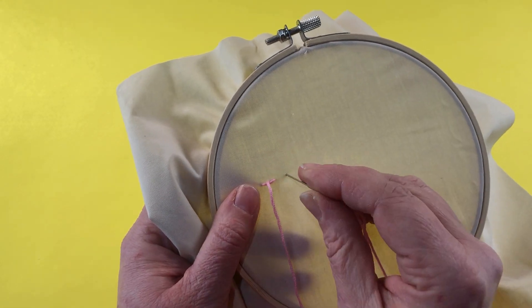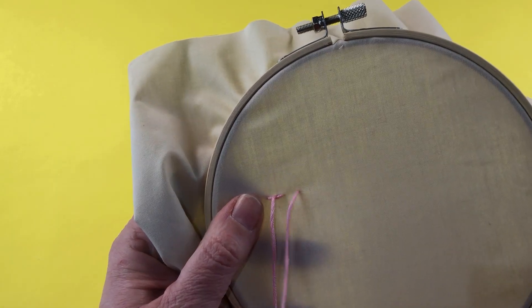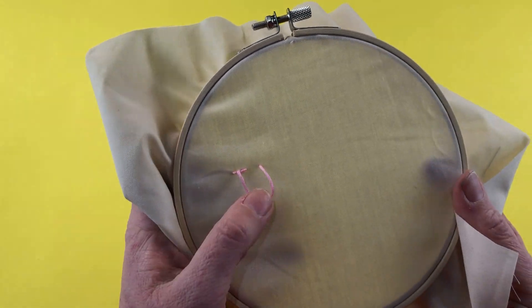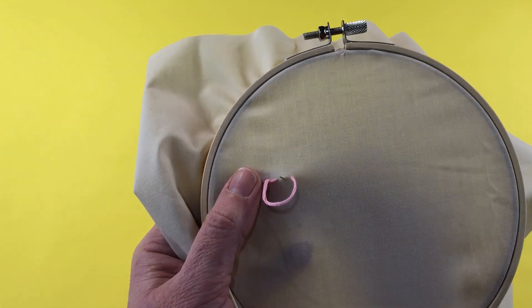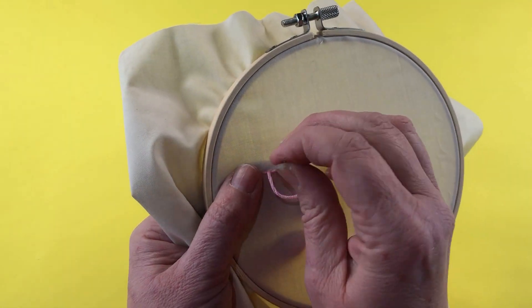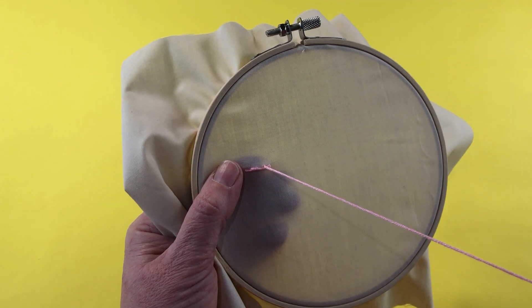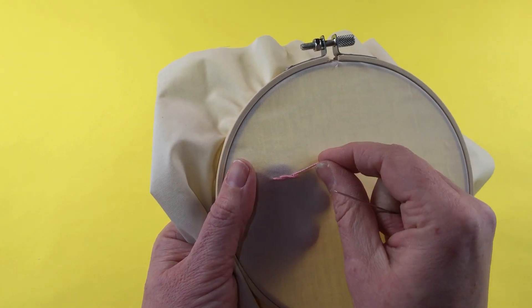Now we're going to go back down again into the material and again we're going to leave some embroidery floss in a loop. We're going to come halfway up and then we're just going to pull again.